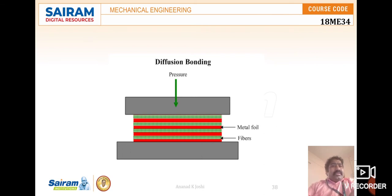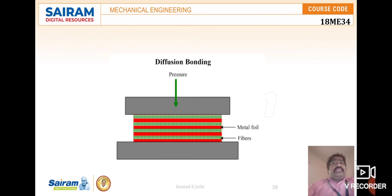In this figure, the red color indicates metal foils and the green structure represents the reinforcement of long fibers. This is placed in a vacuum chamber where pressure is applied. The process begins with stacking of aluminium foils, the matrix, and silicon carbide coated boron fibers in the desired sequence as shown in the figure. This arrangement is called a ply.